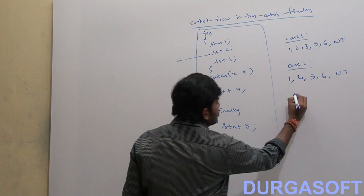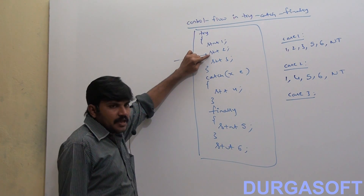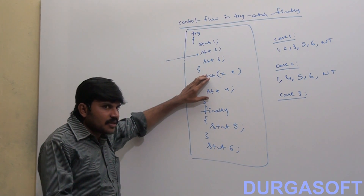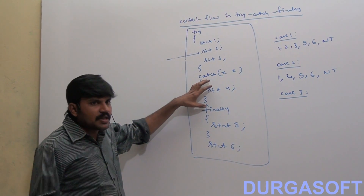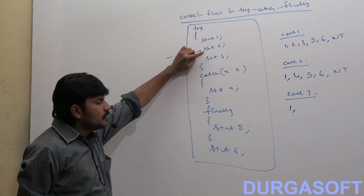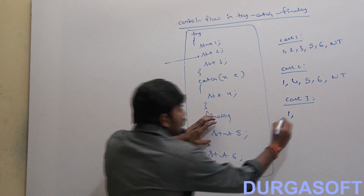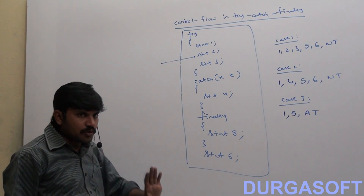Case 3: If an exception rises at Statement 2 but the corresponding catch block is not matched, it leads to abnormal termination. However, before abnormal termination, the finally block will compulsorily be executed — even in the case of abnormal termination. So the flow is: 1, then the exception at 2, then finally executes Statement 5. After that, abnormal termination. The remaining statements won't be executed.